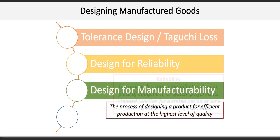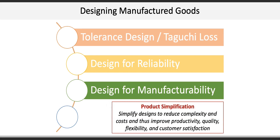The third activity is design for manufacturability — the process of designing a product for efficient production at the highest level of quality. This can be achieved through product simplification, which is the process of trying to simplify designs to reduce complexity and cost, and therefore improve productivity, quality, flexibility, and even customer satisfaction.